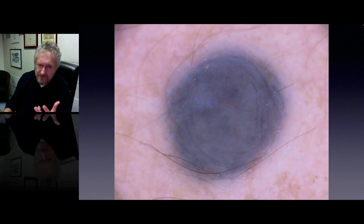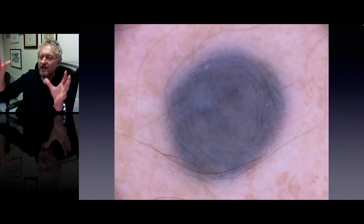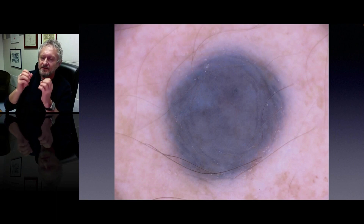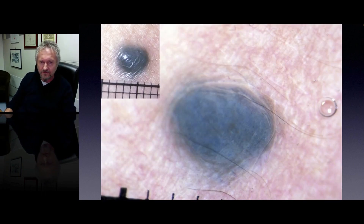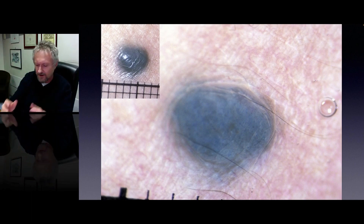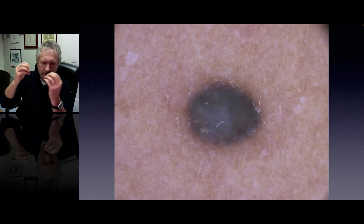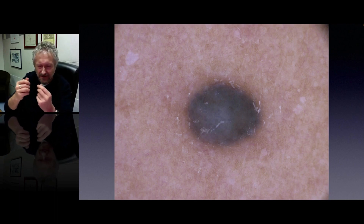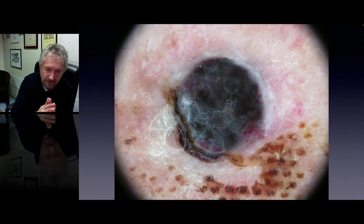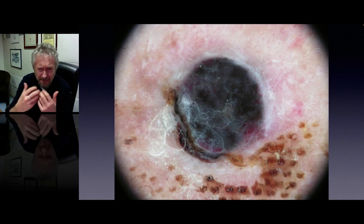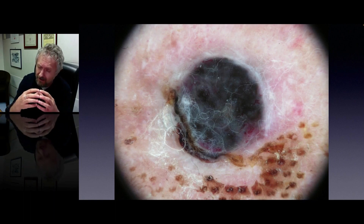The third type of nevus is blue nevus. Blue nevi are again very regular — the overall architecture is very regular — and the specific clue is the presence of homogeneous blue color. Here you see a beautiful prototype case, and here is another case of blue nevus with a very regular overall architecture and only blue color. Again, here another example of blue nevus with one-color blue. Of course you see some kind of variation here, but you must tolerate these little variations.